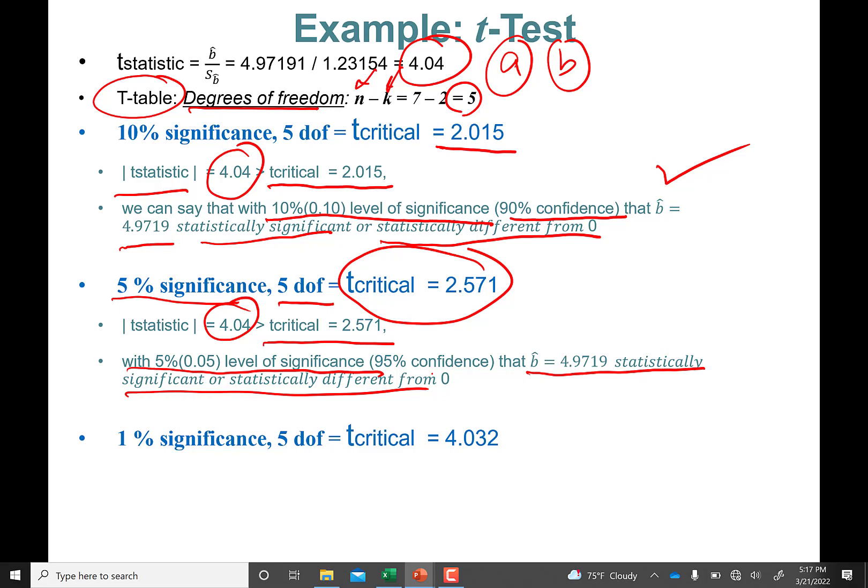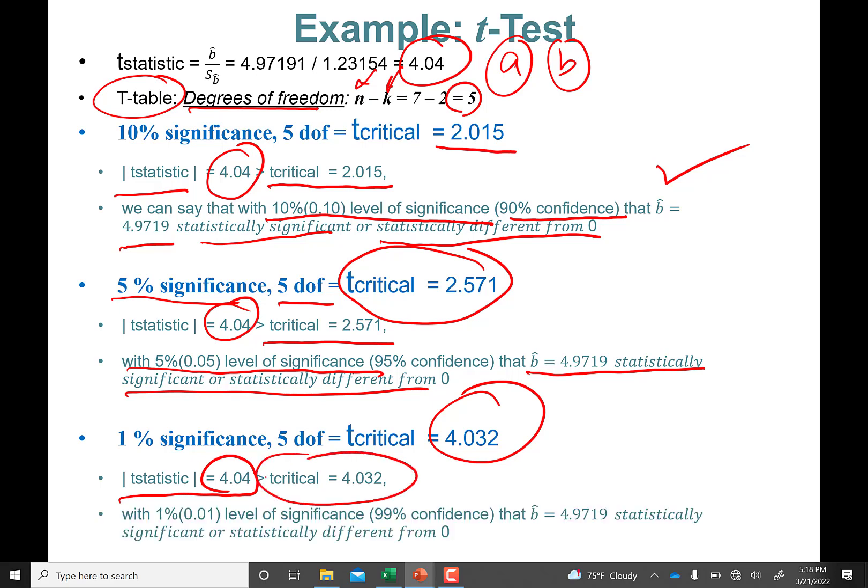Again, let's check to see if it's significant at the 1% level. T-critical value is 4.032, which is—okay, so the t-statistic is 4.04, greater than it—it exceeds the t-critical value.